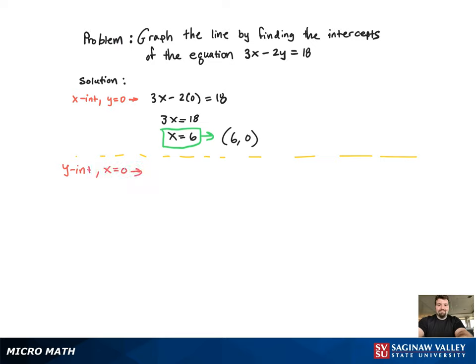Alternately, that means x equals 0. Now we get negative 2y equal to 18.